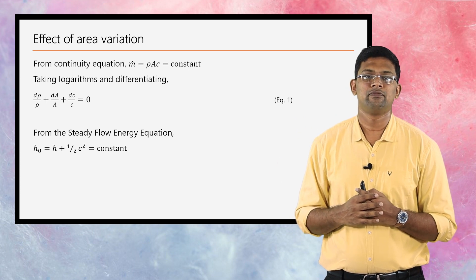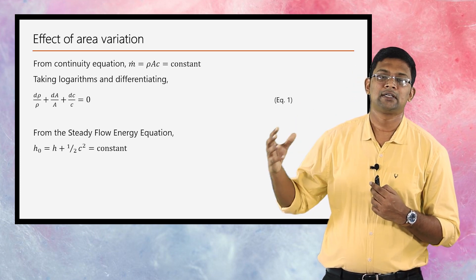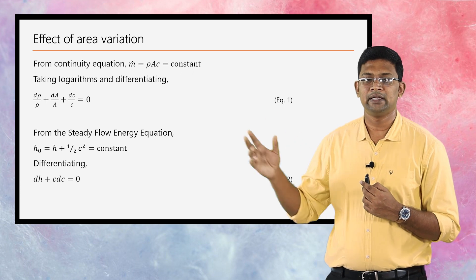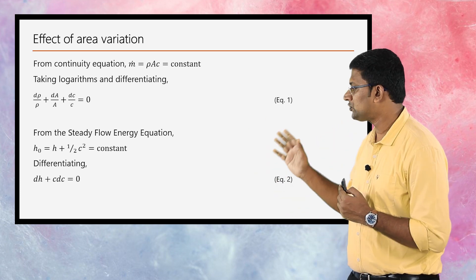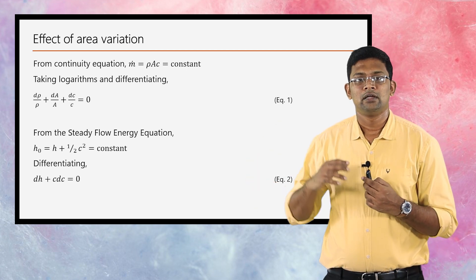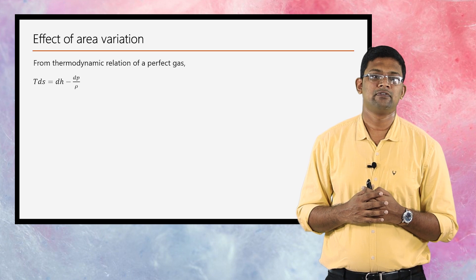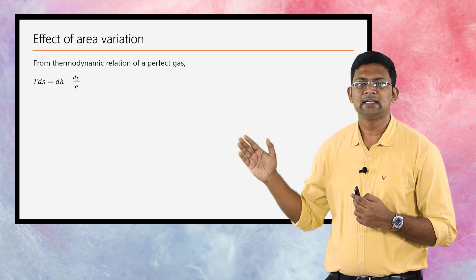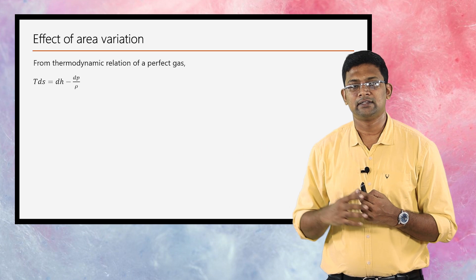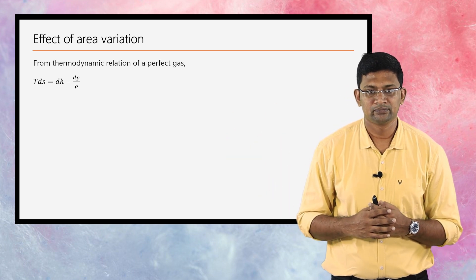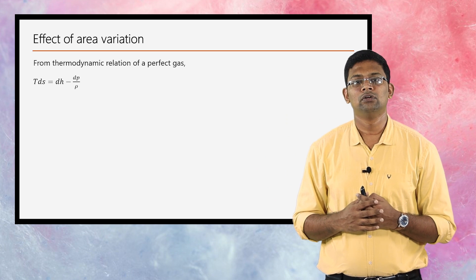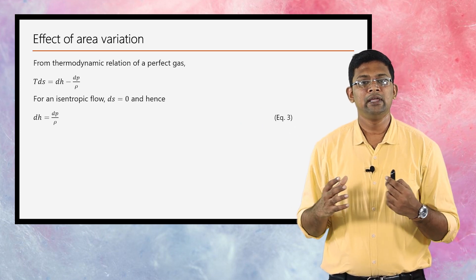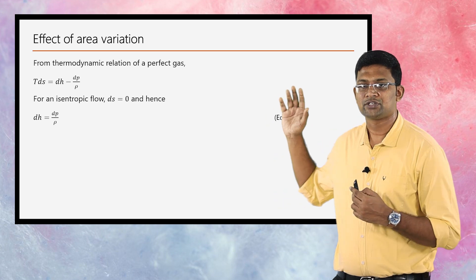From the steady flow energy equation, h₀ = h + ½C² is constant. Differentiating: dh + C dC = 0. This is equation 2. From the thermodynamic relation for perfect gases: T dS = dh − dP/ρ. For an isentropic process dS = 0, so this reduces to dh = dP/ρ. This is equation 3. Substituting equation 3 into equation 2 gives: dP/ρ + C dC = 0, or dC = −dP/(ρC²). This is equation 4.